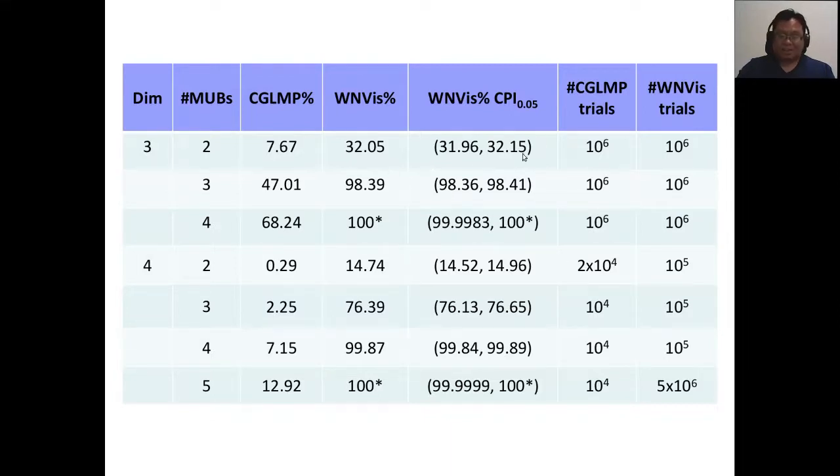The size of this interval depends on the number of trials that you consider. As you can see here, when you have d plus 1 MUBs in dimension d, so 4 for 3 and 5 for 4, then we have probability of violation that's indicated to be 100 star, meaning it's very close to 100%, but strictly less. So there's a few trials where we don't get violations.